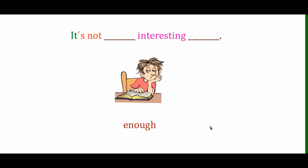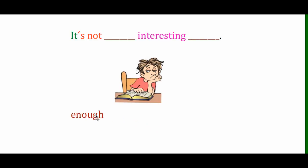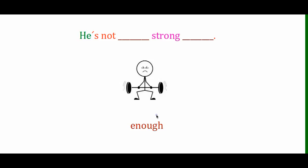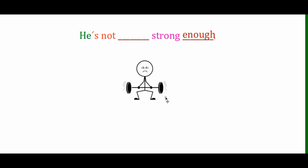Let's do some practice. We want to decide where to put 'enough'. We have a boy who looks very bored — there isn't a sufficient amount of interest. Would we say 'it's not enough interesting' or 'it's not interesting enough'? Well, 'interesting' is an adjective, and 'enough' always goes after the adjective. So we say: 'It's not interesting enough.' Similarly, would we say 'he's not enough strong'? No — 'strong' is an adjective, so we say: 'He's not strong enough.'